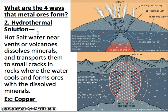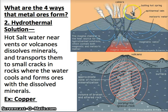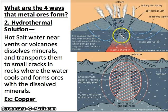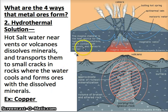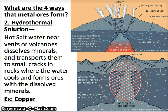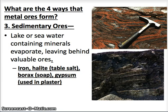The second way ores form is through hydrothermal solutions. Hot water near vents — small openings in the earth's crust — or volcanoes dissolves minerals and transports them into small cracks in the rock. As the water cools, it forms ores from the dissolved minerals. Copper is an example of a metal that forms in this way, as shown in these diagrams.